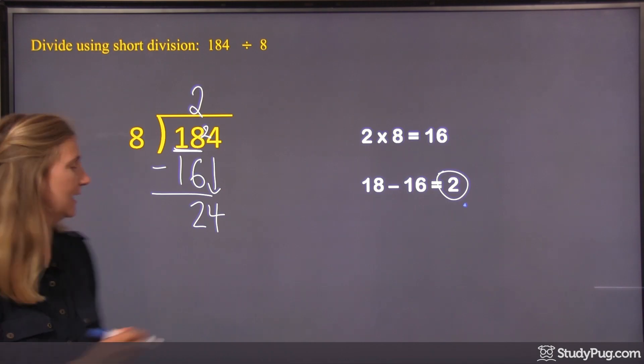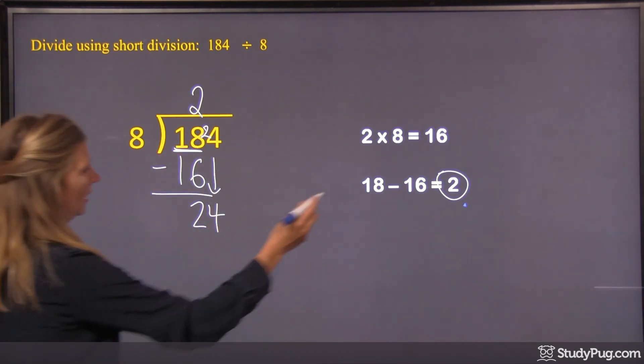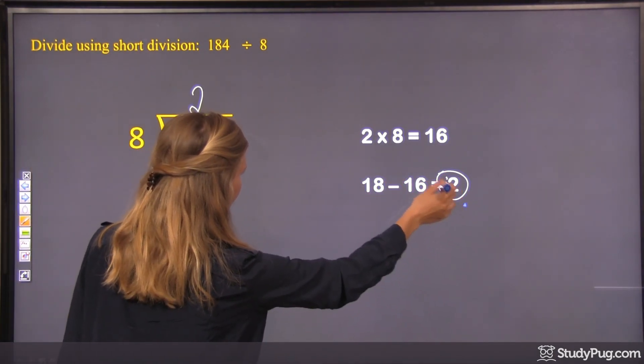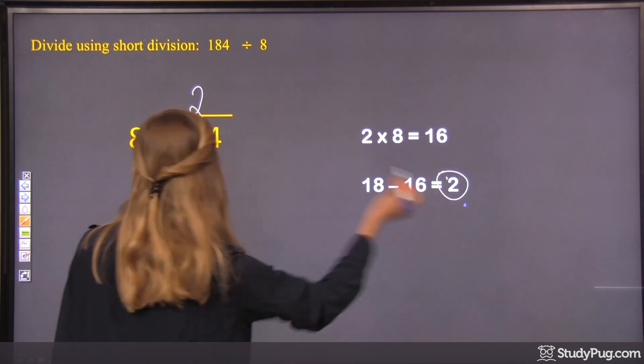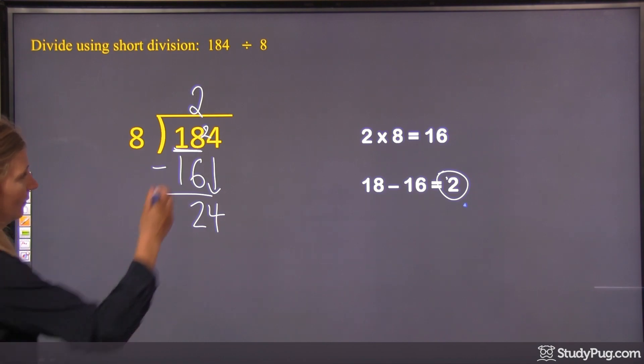So in short division, instead of writing out all this, we just go automatically to this. We take our remainder from 18 minus 16. So what's left over, we take that 2. And we put it right in front of the next digit that we're going to be dividing by.